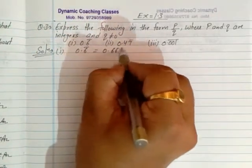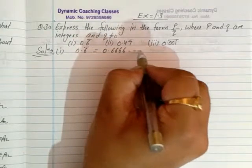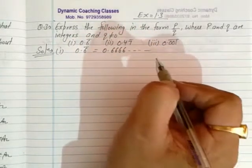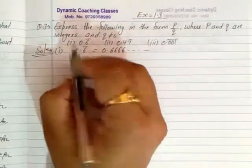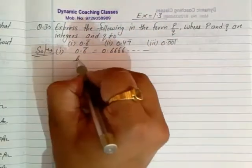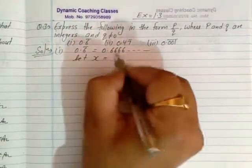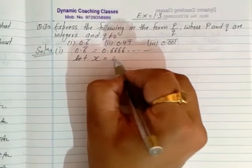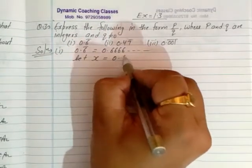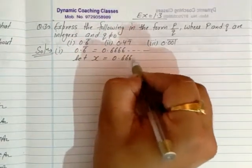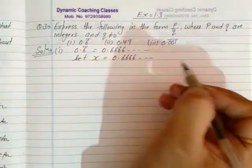0.6 bar means 0.666... and so on. So let x equal to 0.66666... and so on.